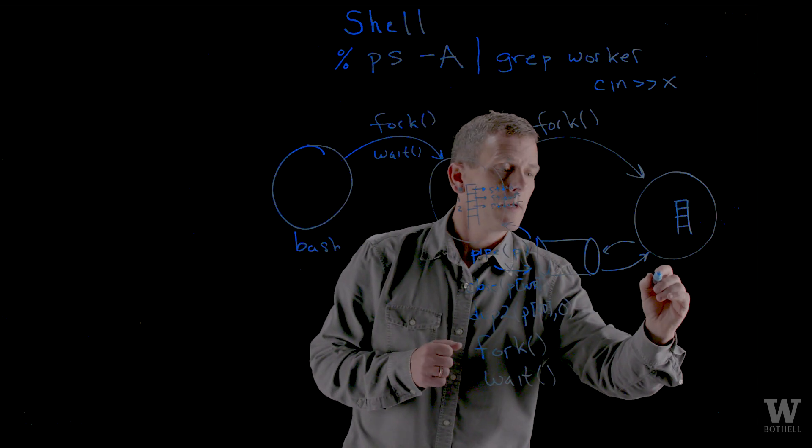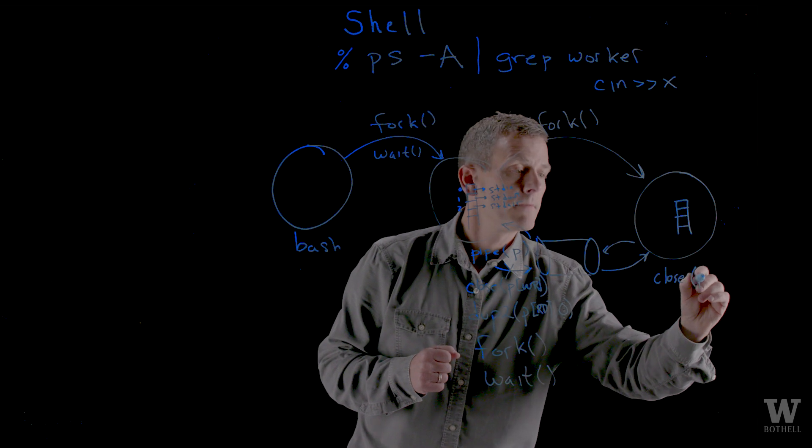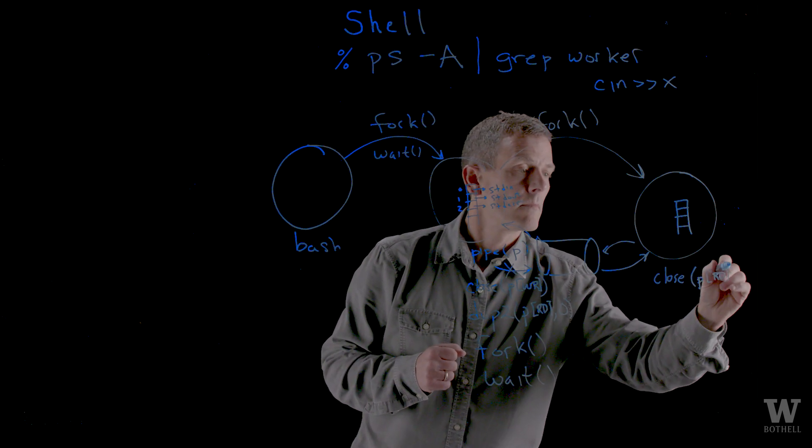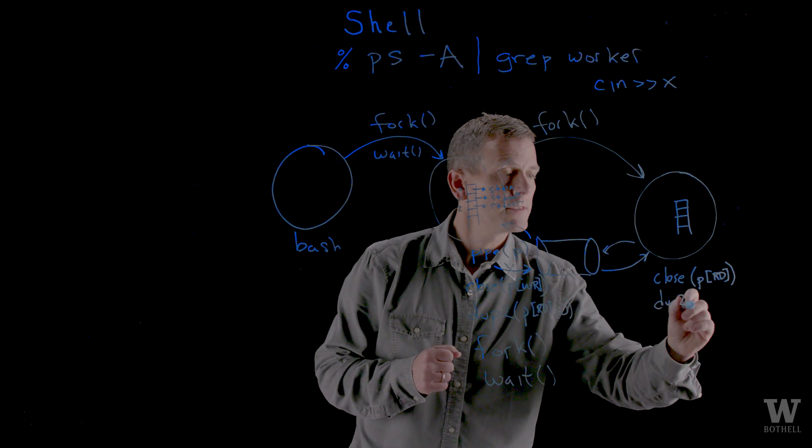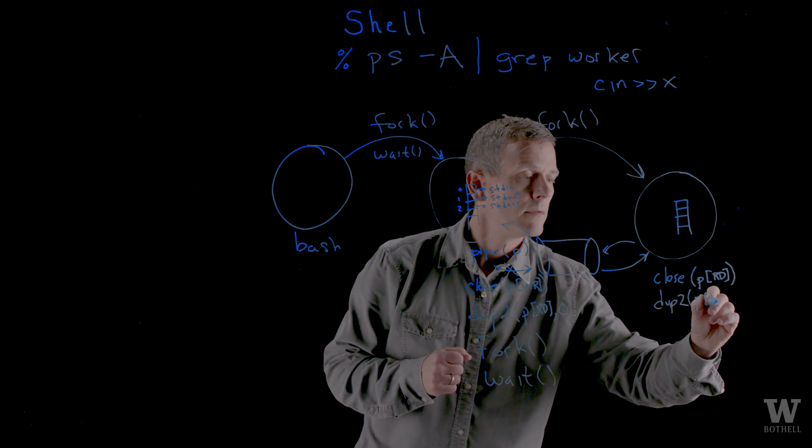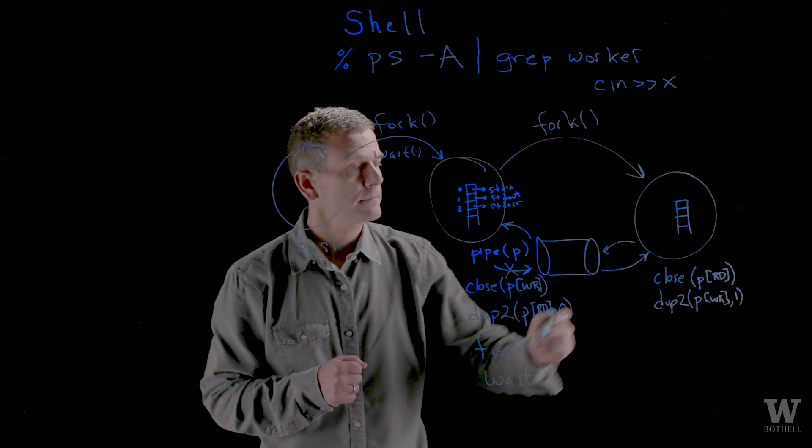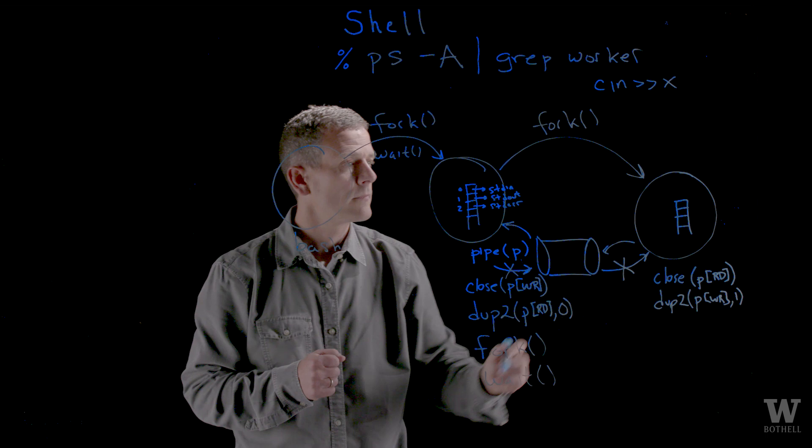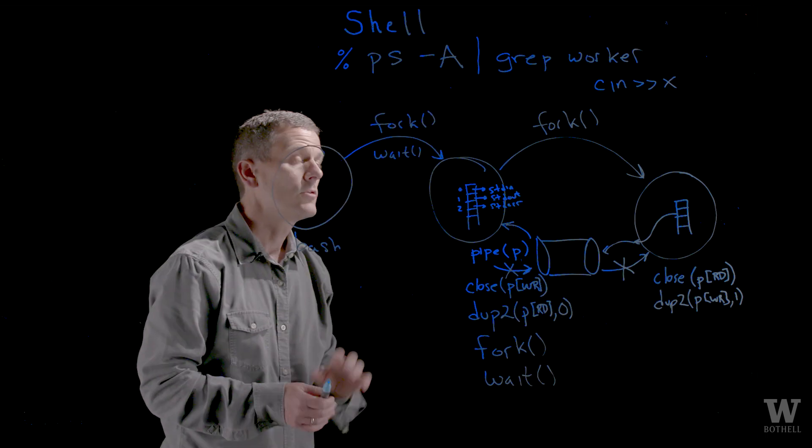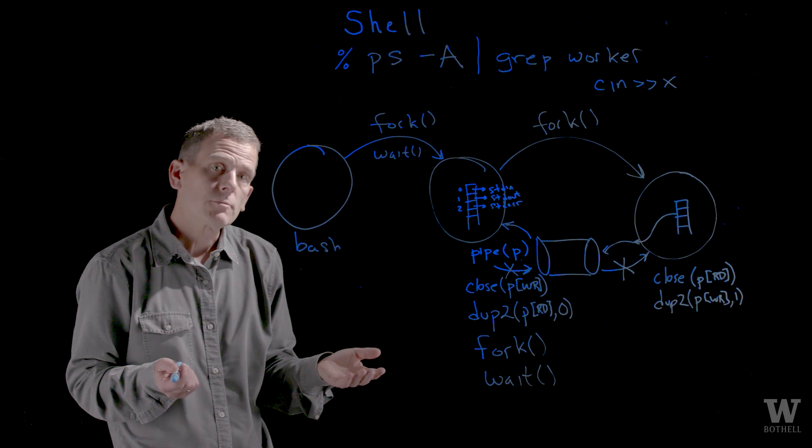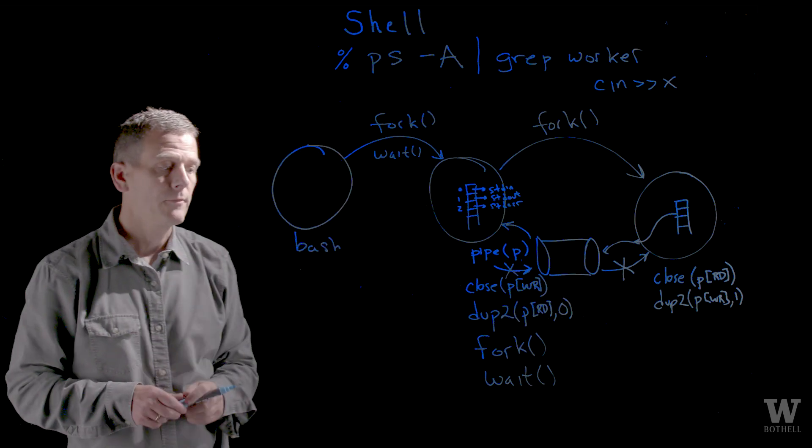So I go ahead and close the read side of the pipe and dup2 the write side of the pipe to standard out for that process. The read side gets closed and the write side goes to standard out. So now any text that the process will write will go into the pipe and will be read by the previous process.